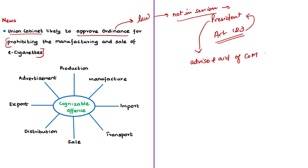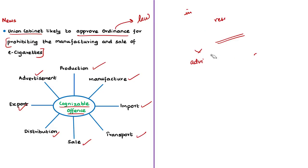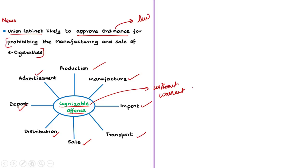According to news sources, if the ordinance is promulgated, the law would make production, manufacture, import, export, transport, sale, distribution or even advertisements of e-cigarettes a cognizable offense. Cognizable offenses are those in which the police can arrest a person without any warrant — these offenses are more serious in nature. So the government is planning to make the production, manufacturing and even advertisement of e-cigarettes offenses of a serious nature.